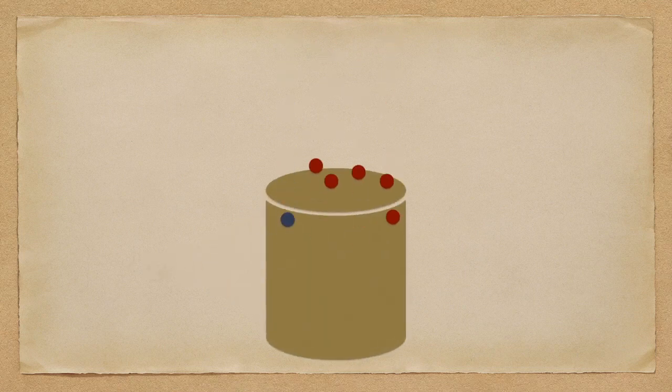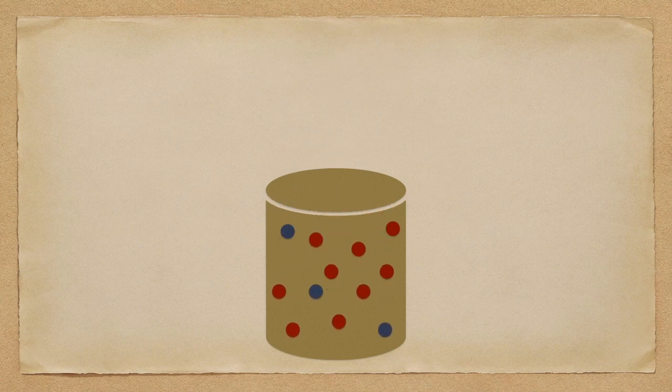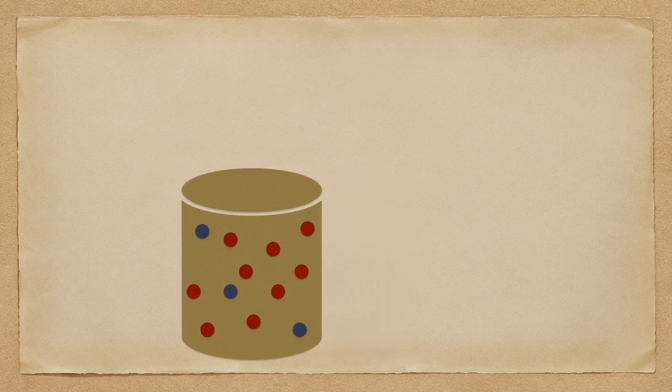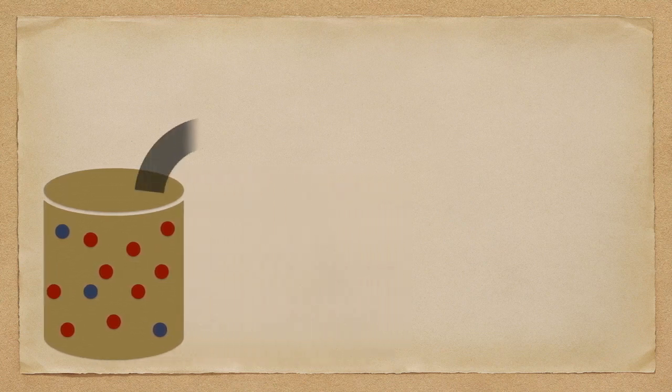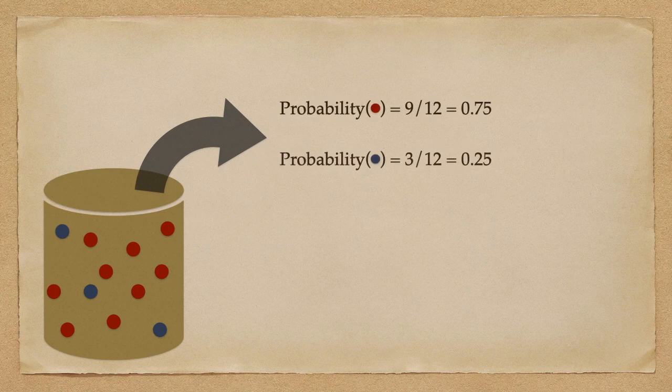We now consider a source, modeled as a cylindric box, containing red and blue balls. For instance, red balls can be associated with zeros, whereas blue balls can be with ones. We consider the probability of getting a red ball is 0.75, whereas that of getting a blue one is 0.25.